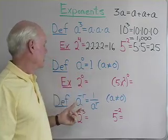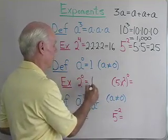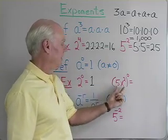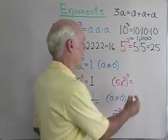So if I have two to the zero power, I'll use my definition, that's one. If I have five x squared to the zero power, that whole quantity to the zero power, still one.